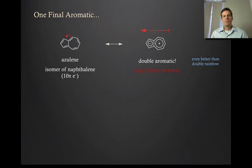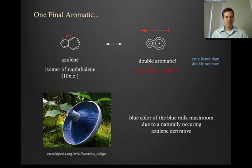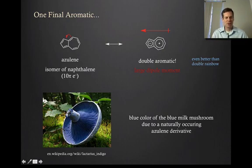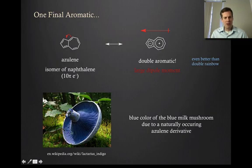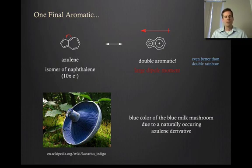This looks fairly esoteric as a molecule, but it turns out there are some naturally occurring Azulene isomers that show up in nature. One of the best examples is the so-called blue milk mushroom. If you were to cut this mushroom, it would leak a milky-like substance that is just blue — as blue as a Smurf. And the molecule responsible for that wonderful blue color is simply a substituted Azulene. There are several of those that occur in nature. That ends our discussion of the polycyclic aromatics.